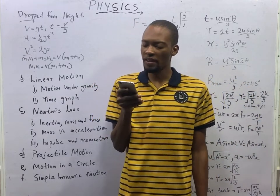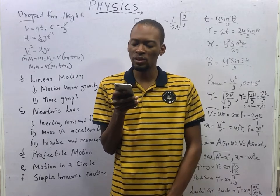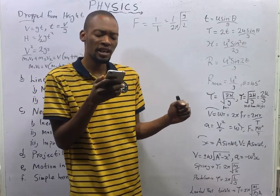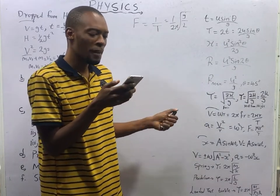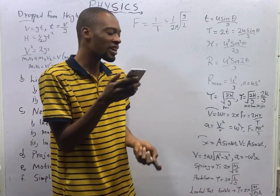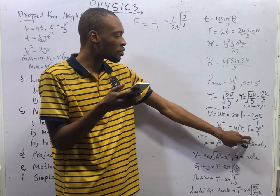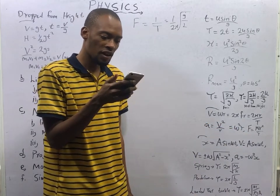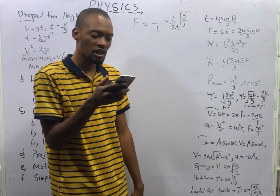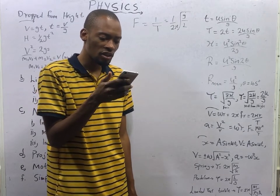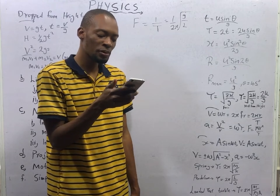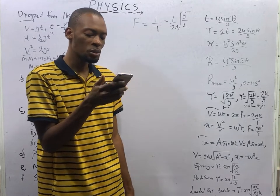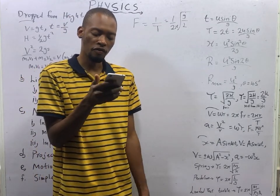A car of mass 1500 kg goes round a circular curve of radius 50 meters at a speed of 40 meters per second. The magnitude of the centripetal force on the car is: F = MV²/R = 1500 × (40²) / 50 = 1500 × 1600 / 50 = 4.8 × 10⁴ newtons, which is 48,000 newtons.